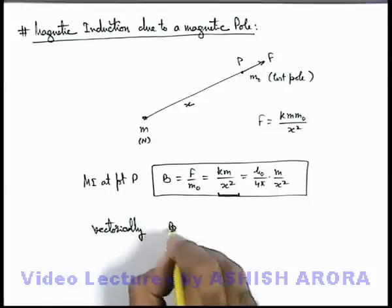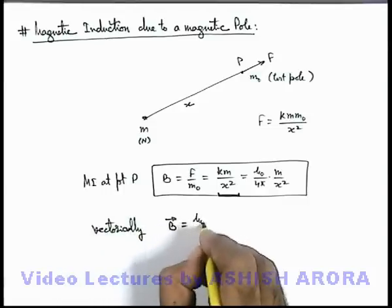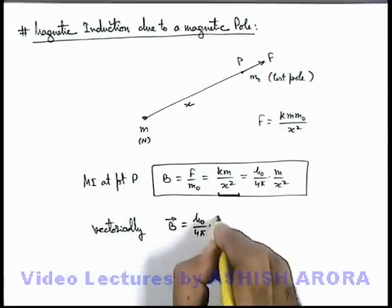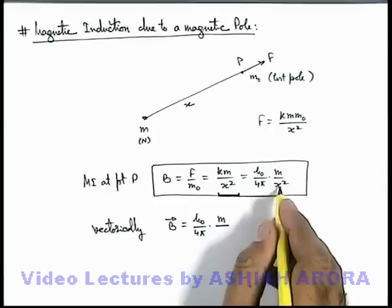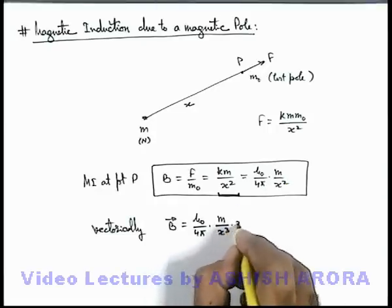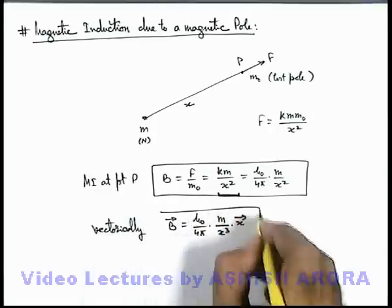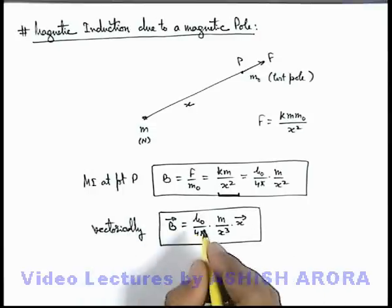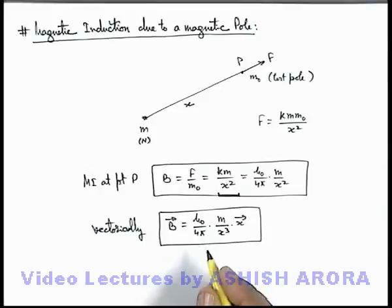This magnetic induction we can write as μ₀/4π * m/x² * x̂. So it can be written as m/x³ multiplied by x vector. That is the vector form of magnetic induction due to a point magnetic pole in its surrounding at a distance x.